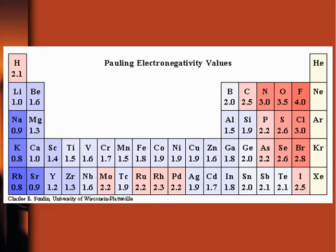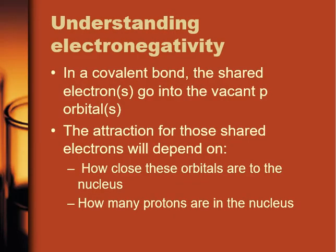So what are the factors that influence electronegativity? Going back to the definition — the tendency of an atom in a covalent bond to attract a shared pair of electrons — we need to understand that in a covalent bond, those shared electrons are going into the vacant, usually p-orbitals. So they're still filling up those empty shells; that's where the electrons are going.